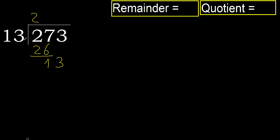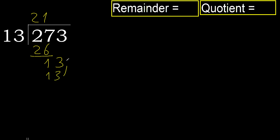13. 13 multiplied by 1 is 13, which is not greater. Ok, subtract 0. Next.